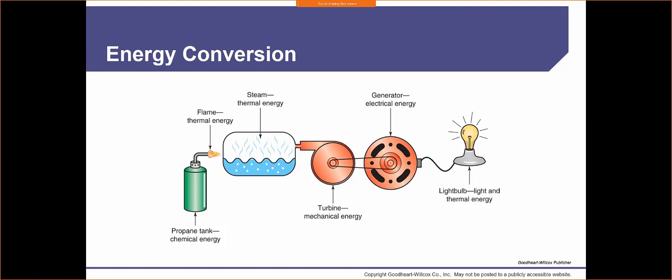This is actually how we generate nuclear power — we simply replace the propane tank's thermal energy with nuclear rods. The nuclear rods boil the water, create steam, and the same premise occurs. You can also use coal or natural gas to create the flame, burn the water, spin a turbine, and create electricity via the generator.